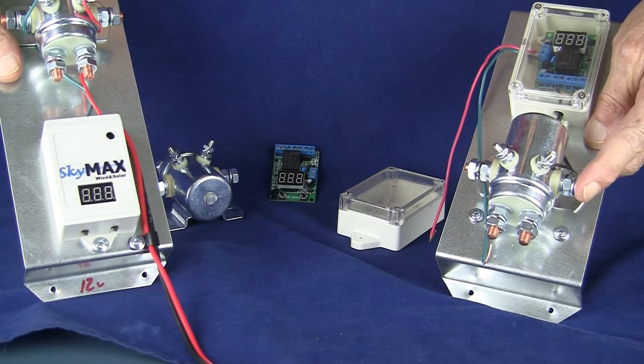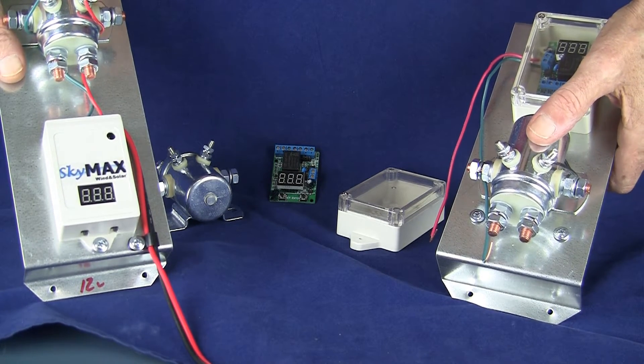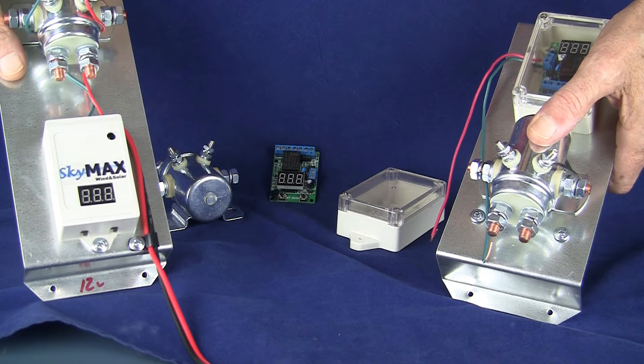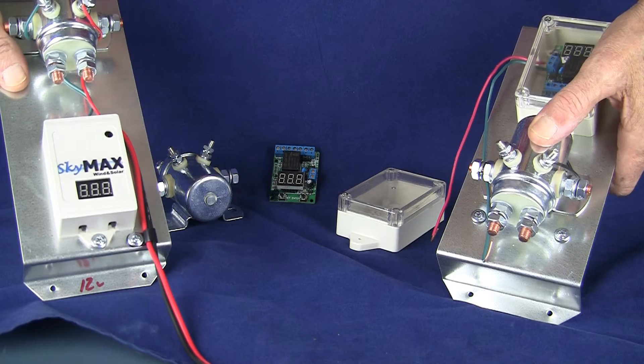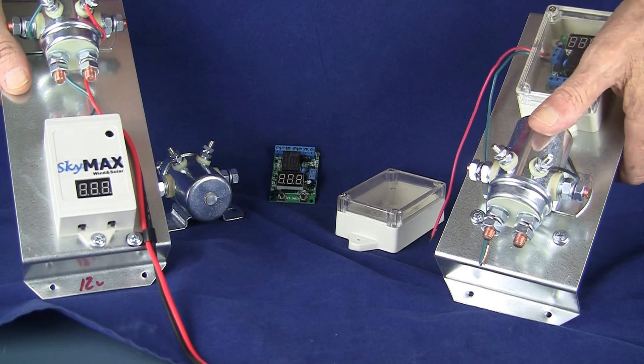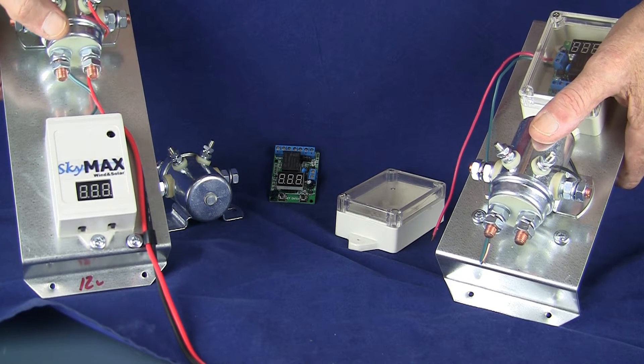Now what this company over here on this side has attempted to do, the California company, is knock off our smart charge controller made by SkyMax Wind & Solar. And they've done a cheap knockoff of it to confuse you to think you were getting the actual smart controller with a real 440 amp relay and the smart controller itself.